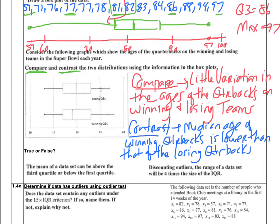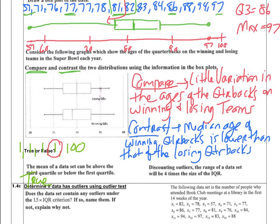Two more true/false questions. First: the mean of a data set can be above the third quartile or below the first quartile. The answer is true. For example, with the data set 1, 1, 1, 1, 100: Q3 equals 1, but the mean equals 104 divided by 5, which is 20.8. The mean is clearly above Q3, so this is true.